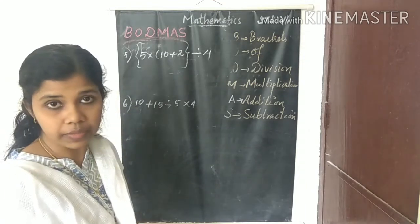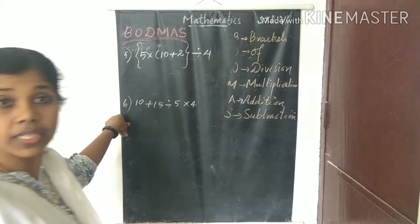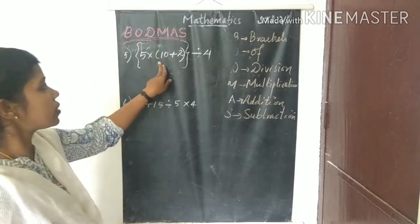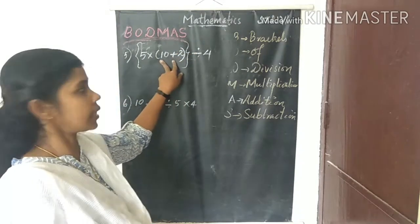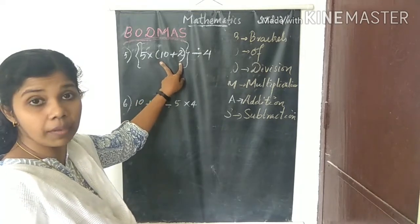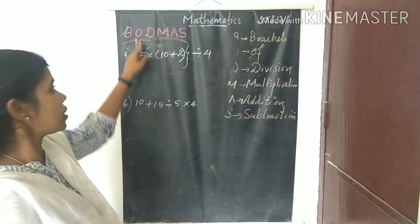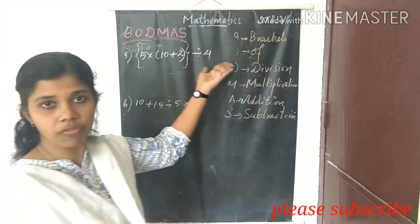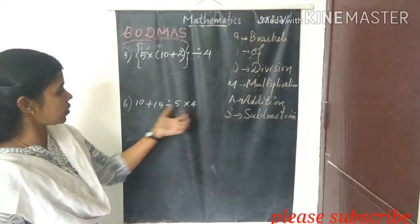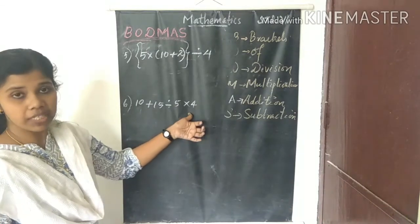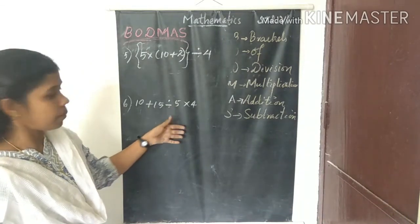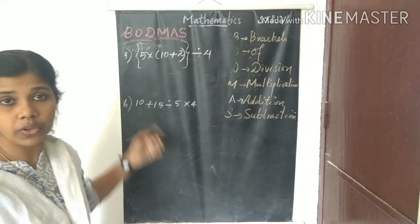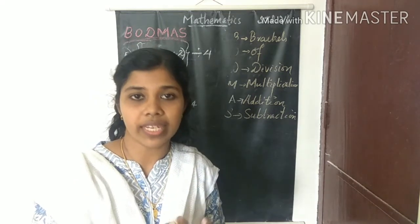We have completed 4 questions. Now I give 2 questions for exercise. In question 1, first do inside the simple bracket: 10 plus 2 equals 12, then 12 × 5 in the curly bracket, then division by 4. In question 2, first do division: 15 ÷ 5 equals 3, then multiplication, then last addition. Thank you all.